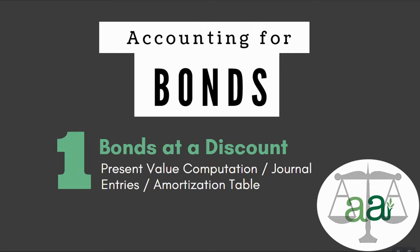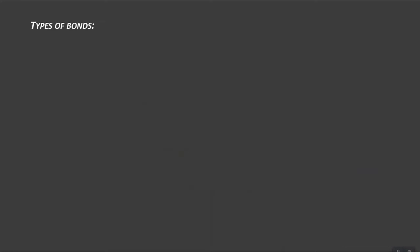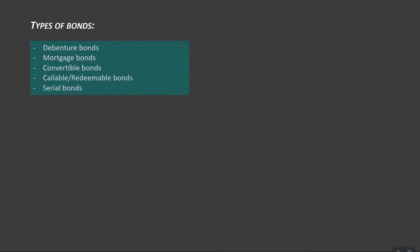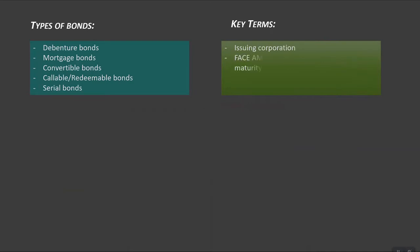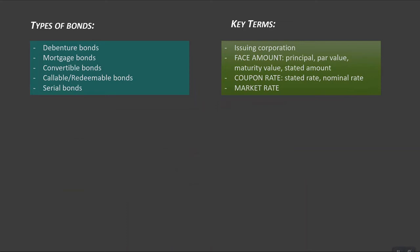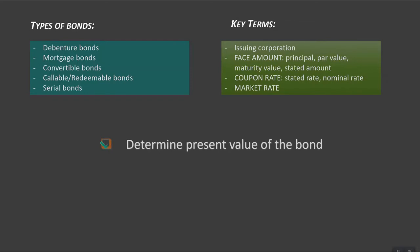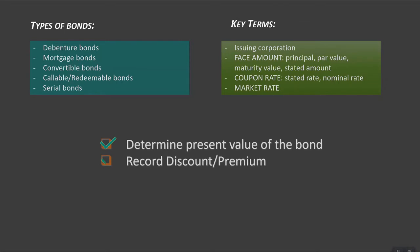Bonds are a unique investment vehicle whereby an investor lends money to a company or government for a set period of time in exchange for regular interest payments. There are a variety of types of bonds, most of which are labeled for their various features. In this video, I am going to explain how to account for a bond on the financial statements.